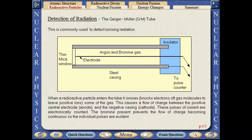When a radioactive particle enters the Geiger-Müller tube, it ionizes some of the gas. This causes a flow of charge between the positive central electrode, the anode, and the negative casing, the cathode.